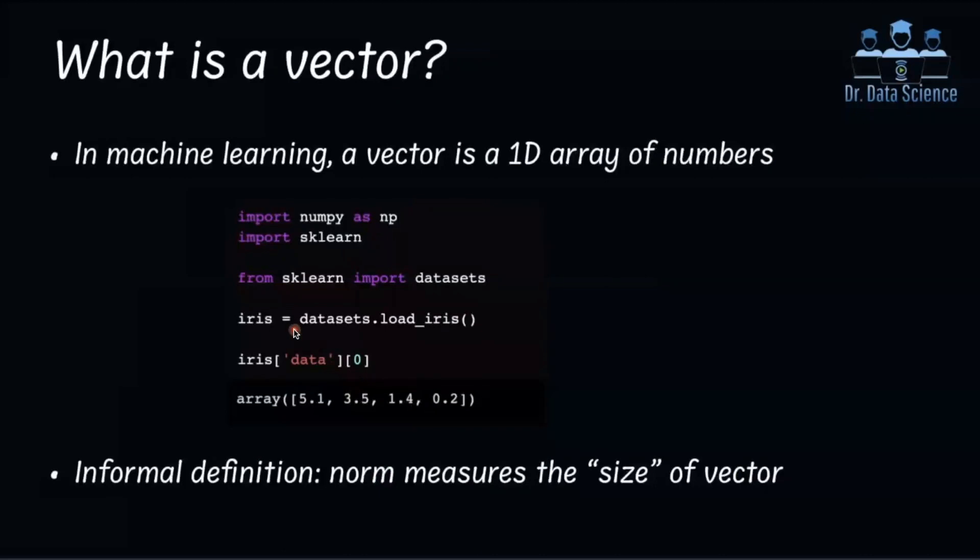So what is a vector? In machine learning, a vector is a 1D array of numbers. For example, let's import NumPy and scikit-learn and look at one of the data sets known as iris flower that is available within scikit-learn. And now we look at the first data point in this data set, and we can see that we have four scalars or four numbers that form a one-dimensional array. So this is what we call a vector.